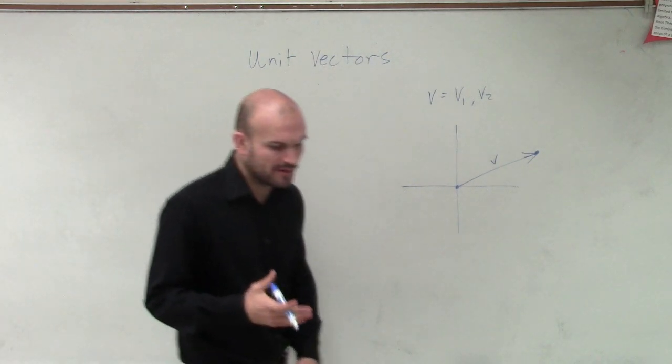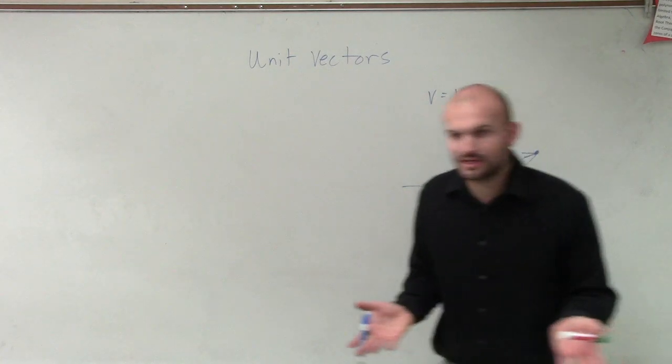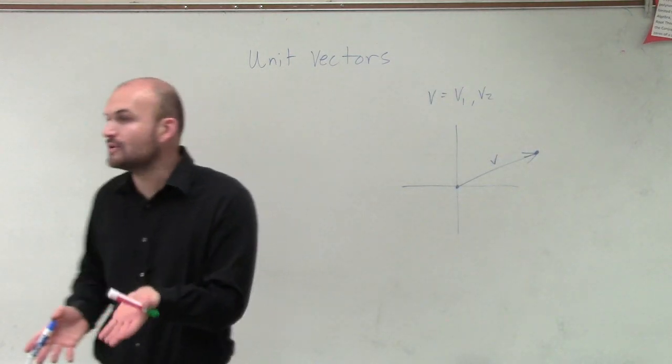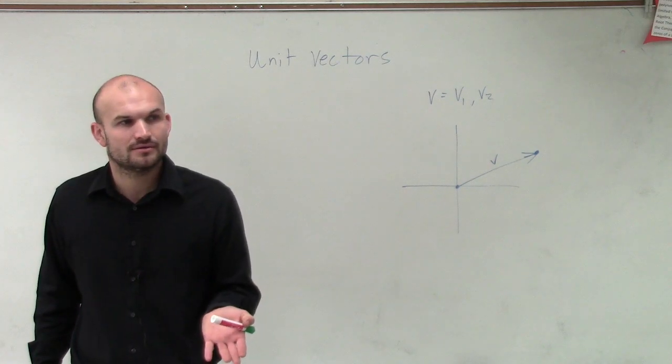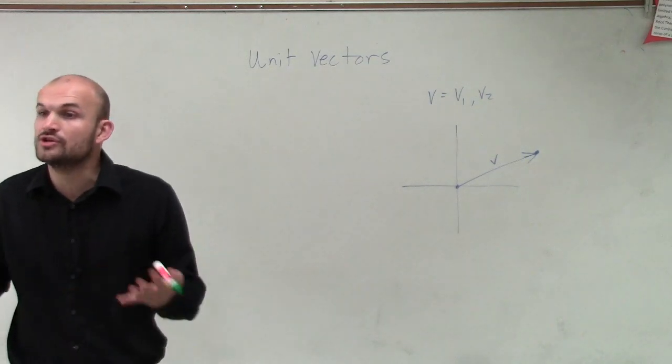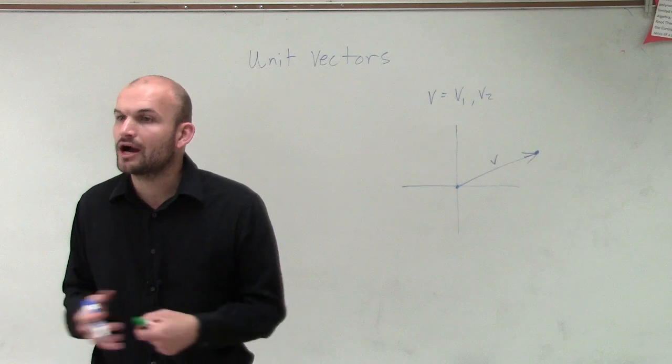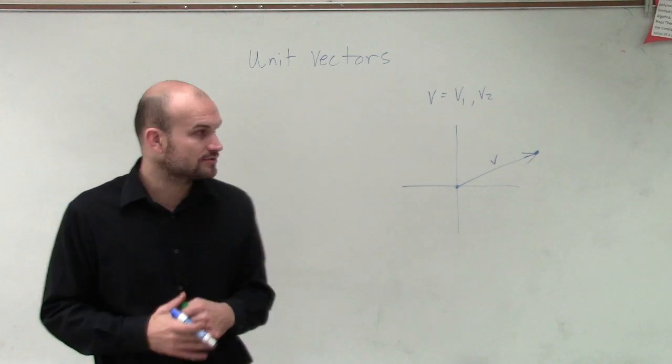One of the things, if you remember, when we were dealing with the unit circle, we called this the unit circle because the radius of the circle was always 1. And whenever we were dealing with angles, that was very helpful for us to know, especially when we got into triangles, it was helpful to know that our hypotenuse was always exactly equal to 1.